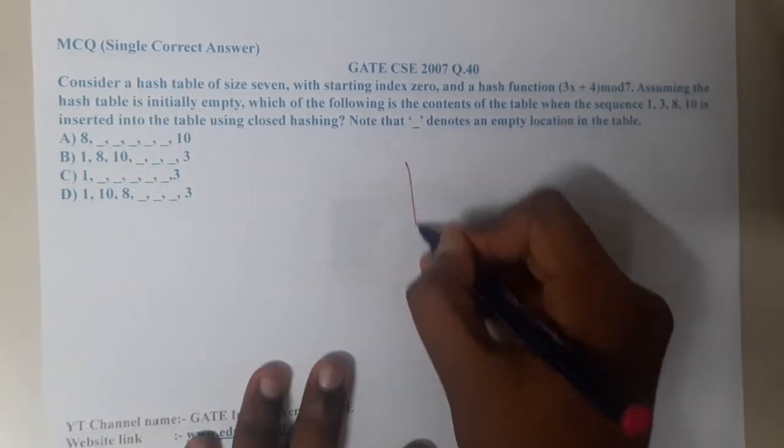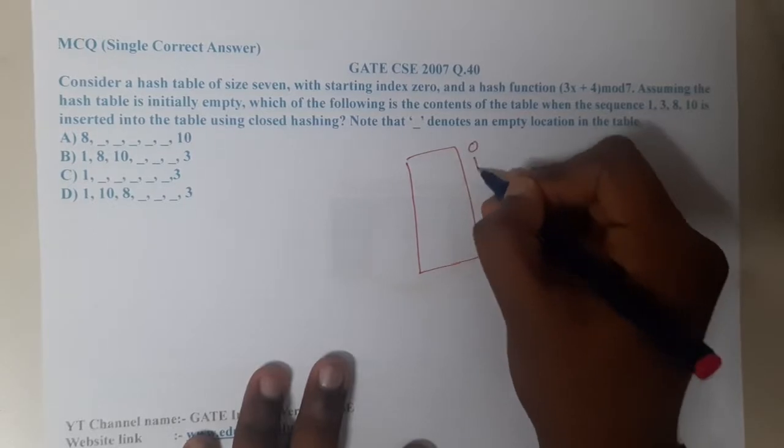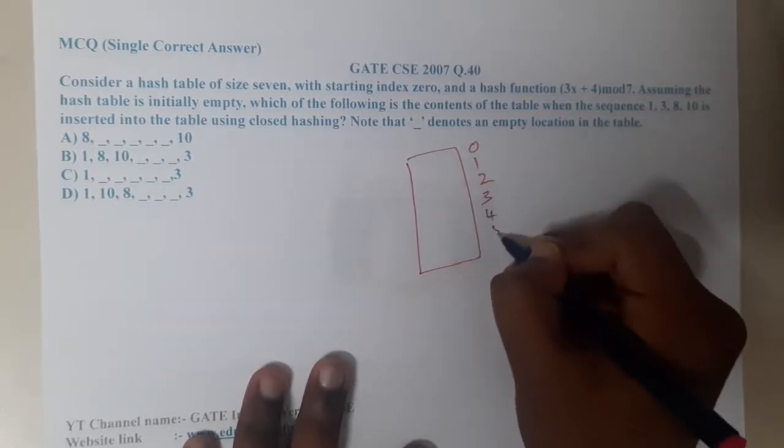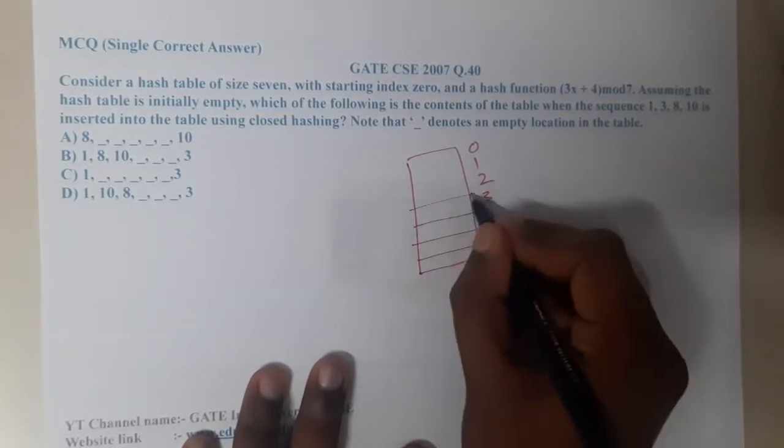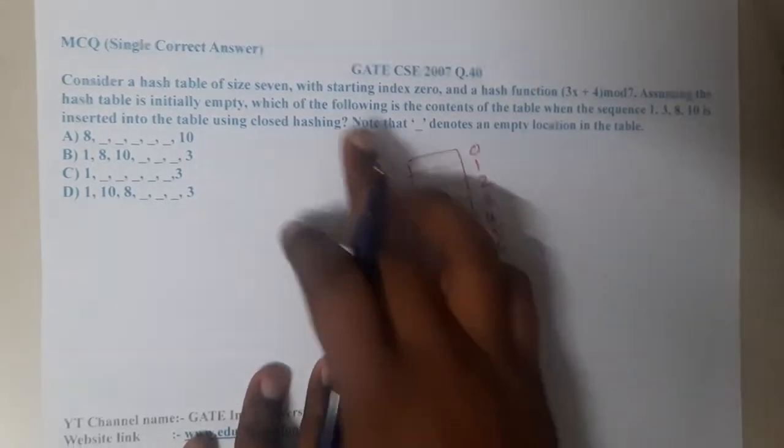The hash table has size 7, with indices 0, 1, 2, 3, 4, 5, 6. Index 7 will not be there because it's a remainder game.